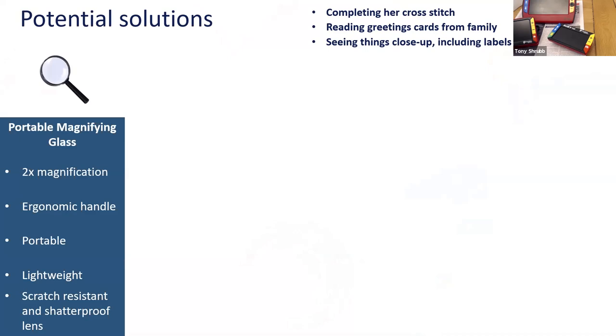So — she wants to complete a cross-stitch, read greetings cards from friends and family, and see things close up including labels on her medication. Our first option is a portable magnifying glass. This particular one is two times magnification — they are fixed — but you can get different powers. They're portable, lightweight, generally scratch-resistant and shatterproof, and relatively inexpensive. You can pick them up for about £20 depending on the type and magnification level.